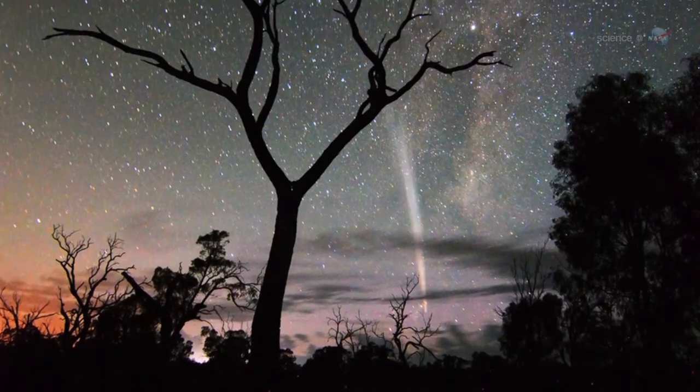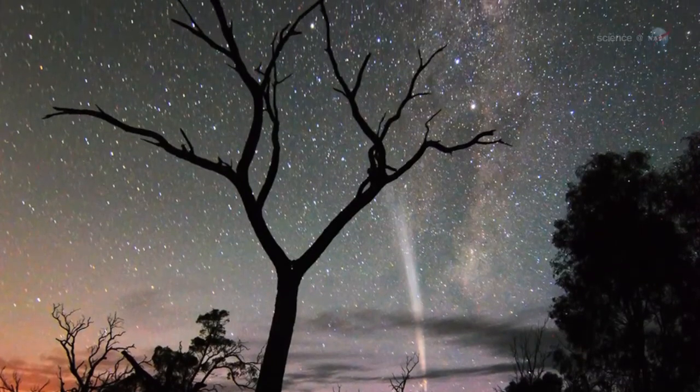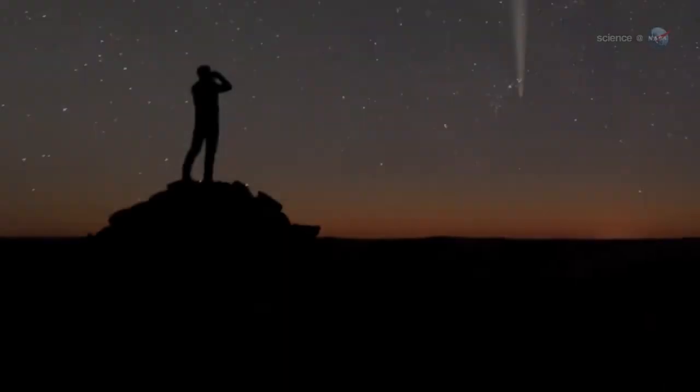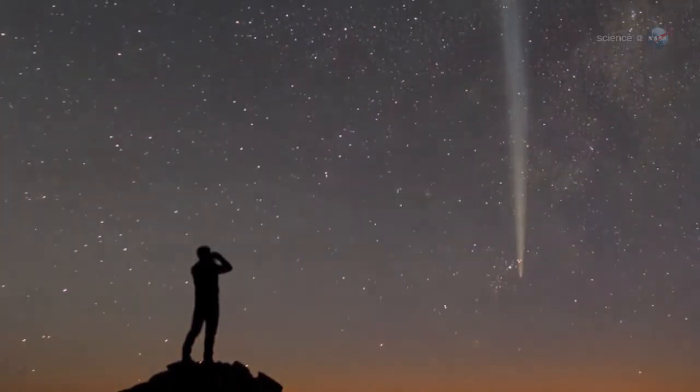The comet that liked it hot is returning to the outer solar system, apparently still intact, leaving many mysteries behind. It'll be back in about 600 years, says Knight. Maybe we will have figured them out by then.